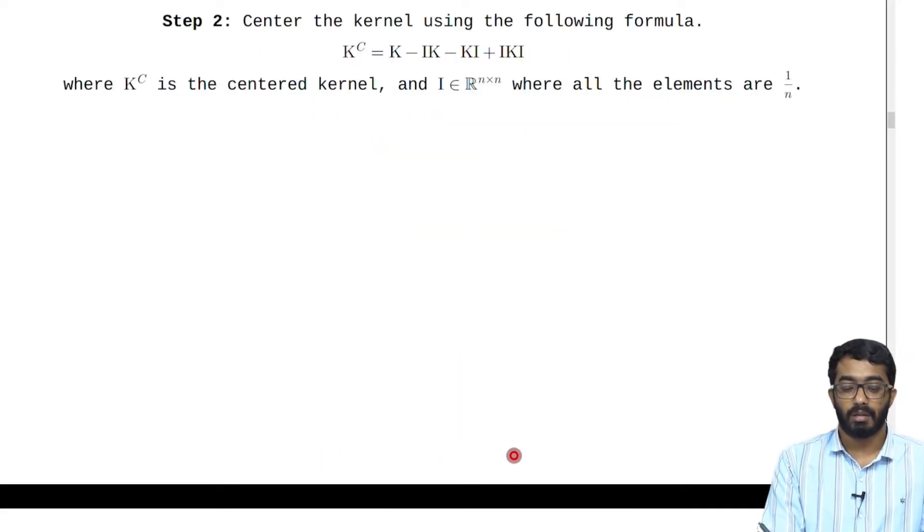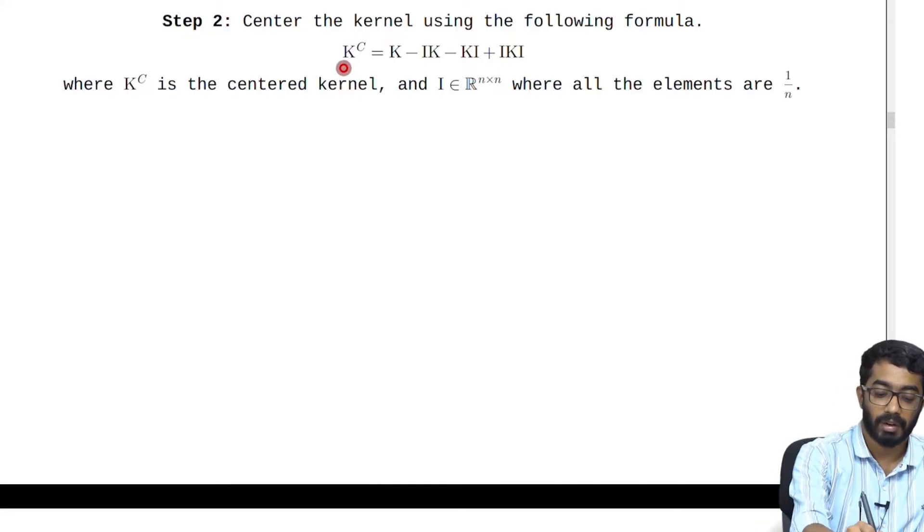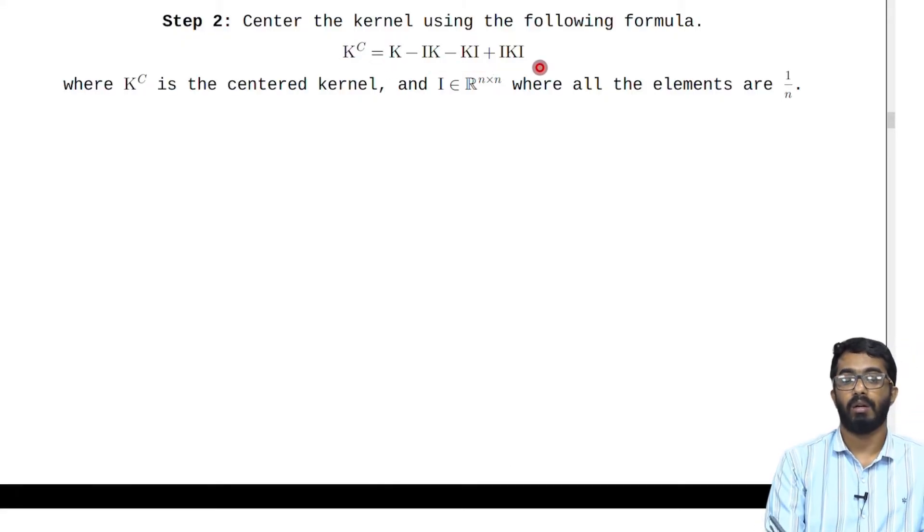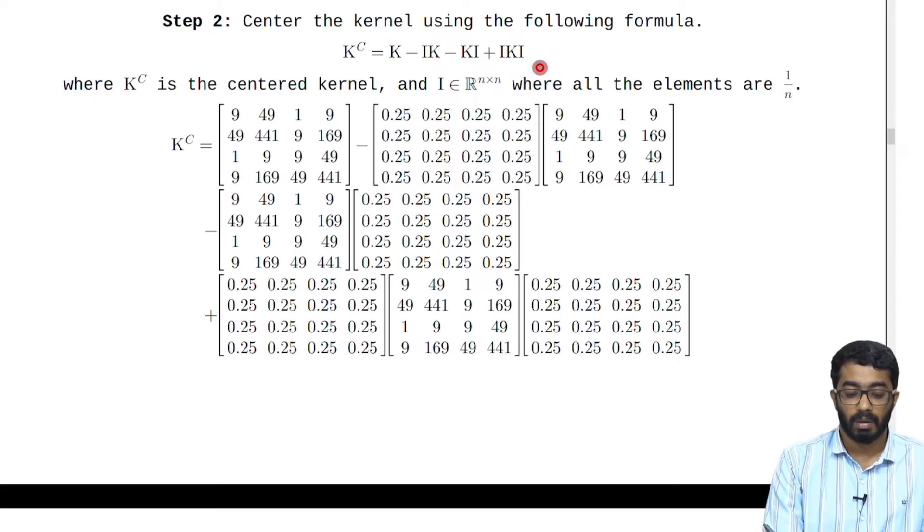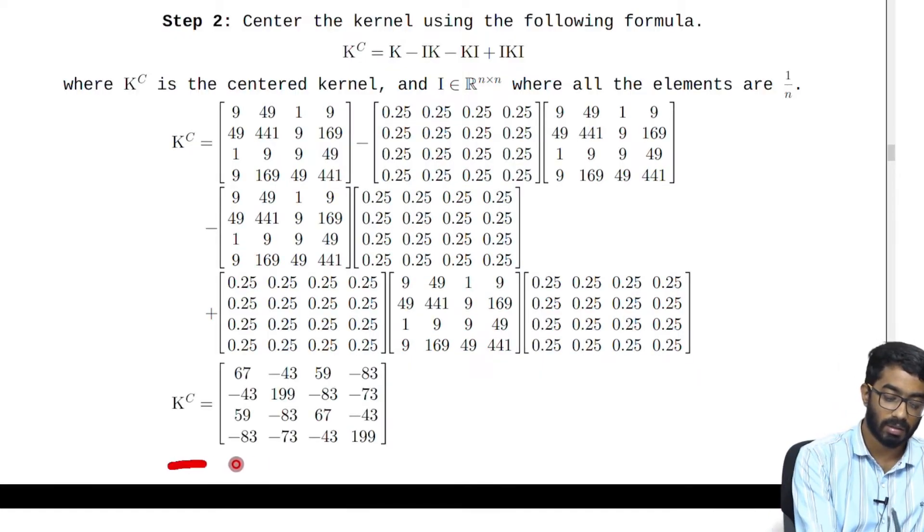Step 2 is to center the kernel using this formula where K_c equals K minus IK minus KI plus IKI. I is an N cross N matrix whose all elements are 1 by N. Plugging in the values of K and I into this formula we get this. Finally K_c is given by this.